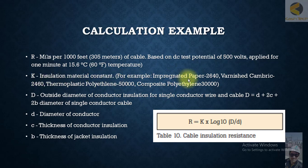K is the insulation material constant. For example: impregnated paper is 2640, varnished cambric is 2460, thermoplastic polyethylene is 50,000, composite polyethylene is 30,000.